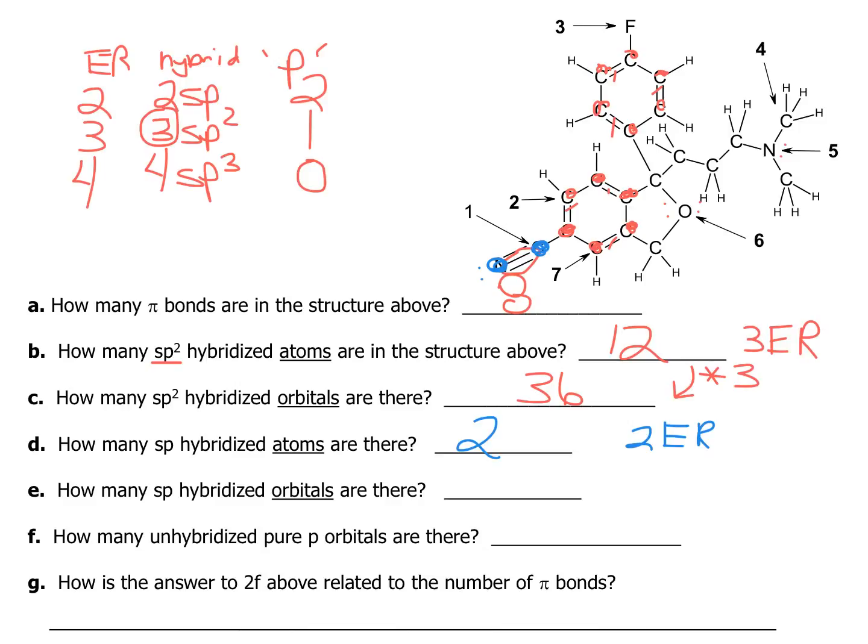As far as how many sp hybridized orbitals are there, remember every time you have an sp hybridized atom, you have two sp hybridized orbitals. So that's simply taking the answer of two, multiplying it by two, to get four.